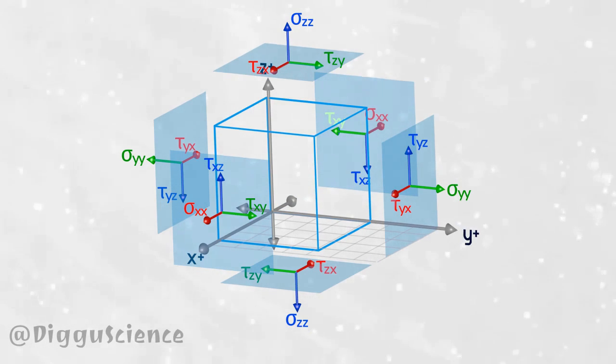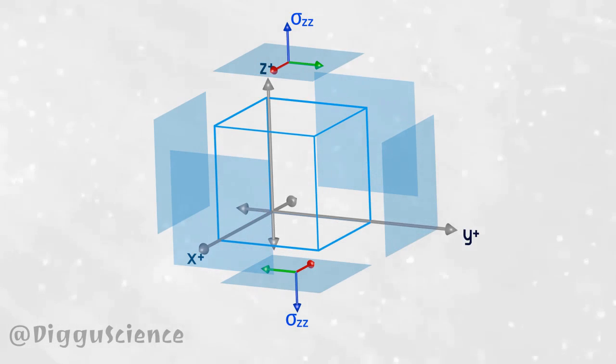Now consider the subscript of each stress. On the top and bottom surfaces, the subscript of this surface is the same, z. Why is that? Since stress is a scalar quantity, it does not need a direction. Writing the subscript as z is sufficient.